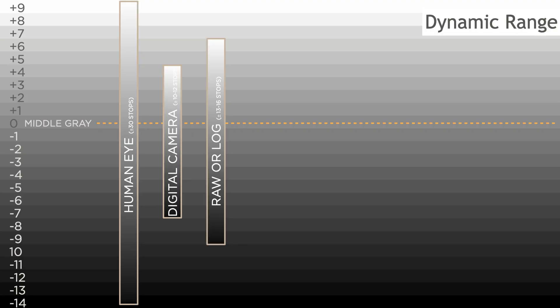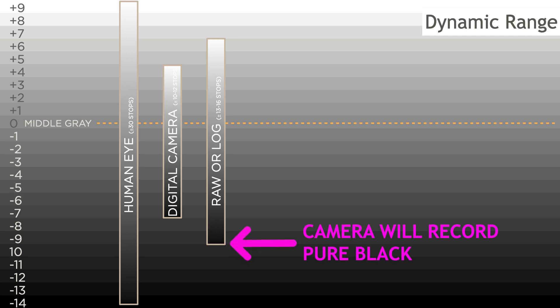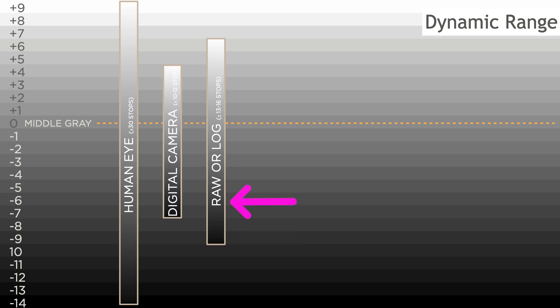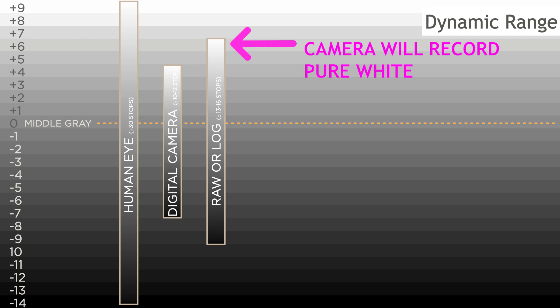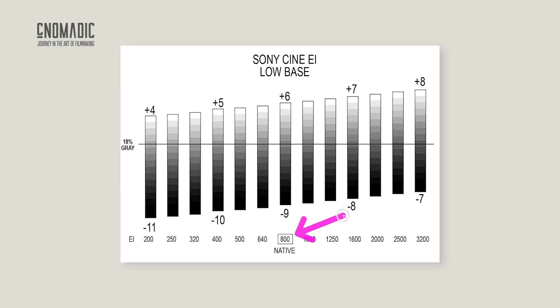When talking about exposure index we also need to understand its relationship to dynamic range. Every camera has a range of tones it can see from deep shadows to bright highlights. Dynamic range refers to how many stops of light a camera can capture between pure black and pure white — once you go beyond that range, the camera stops recording detail, so anything darker becomes solid black and anything brighter becomes pure white. High-end cinema cameras today typically capture around 15 to 17 stops. Sony's dynamic range chart shows that at native ISO 800, the camera captures six stops above middle gray and nine stops below. Lowering the EI to 400 gains one stop in the shadows and loses one stop in the highlights.